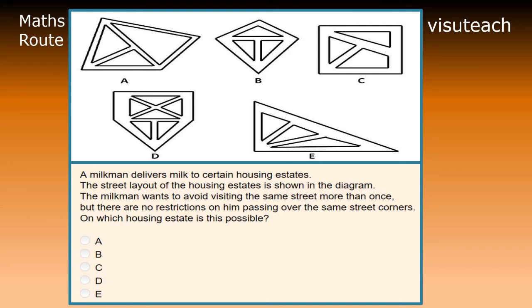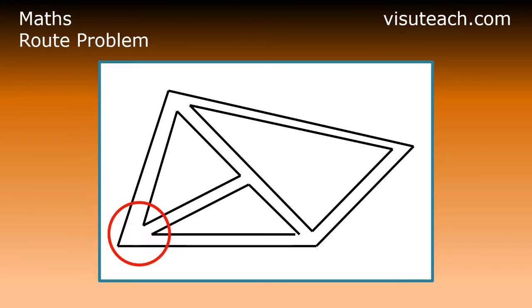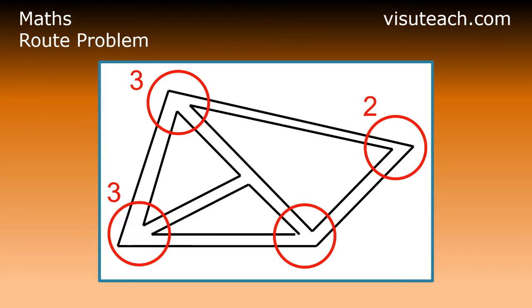Looking at the first housing estate, A, we get the following. This housing estate has four vertices of degree 3 and one vertex of degree 2. It does not have less than three vertices of odd degree, therefore it cannot be the answer.